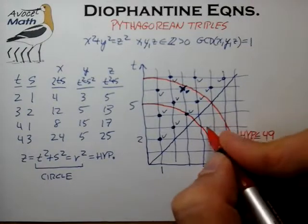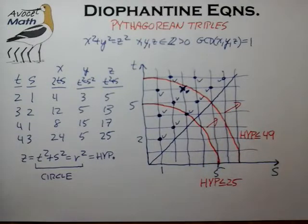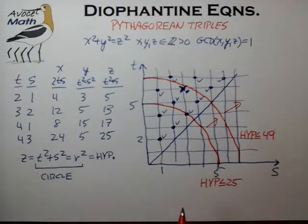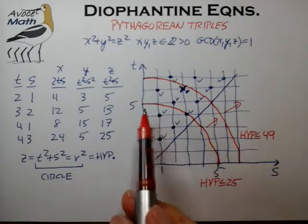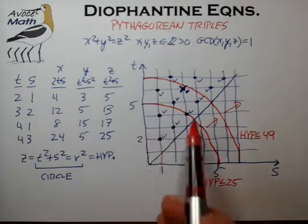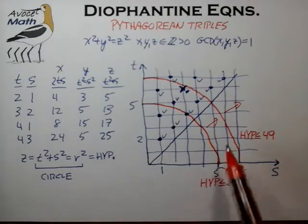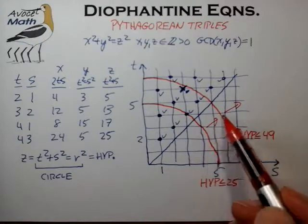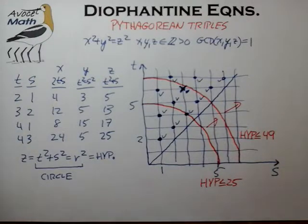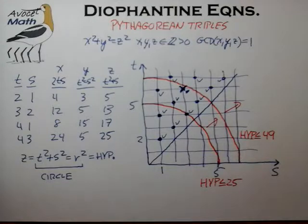We can continue for larger thresholds, but you get the idea. This is a very convenient way for categorizing and listing reduced Pythagorean triples, and for quantifying how many reduced Pythagorean triples exist for a given maximum hypotenuse. With that, we'll send you over to a problem set and review those problems in the next video lecture. Good luck, and we'll see you after that.